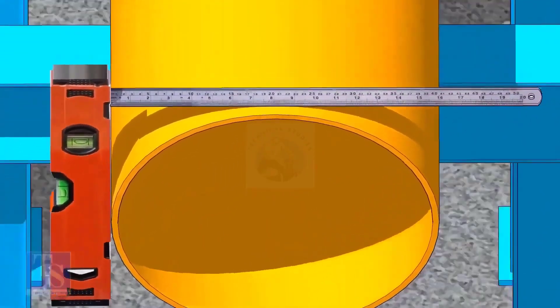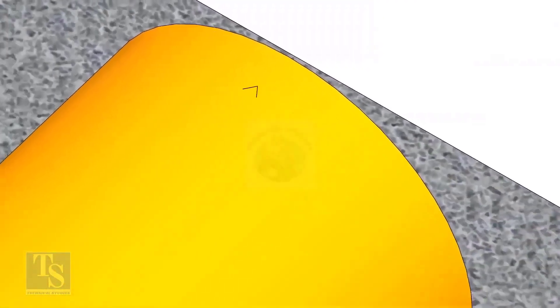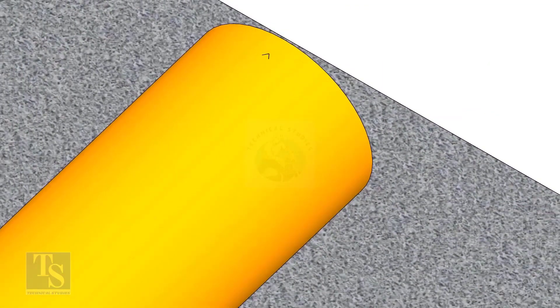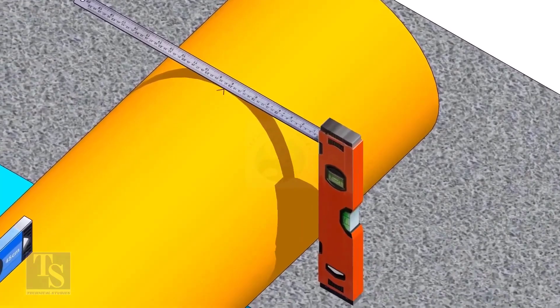Mark half OD at 300mm apart. This pipe OD is 406mm, so mark 203mm from the vertical level bottle on the top of the pipe, and draw a line connecting these marks.